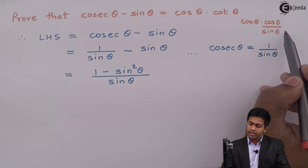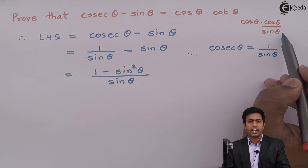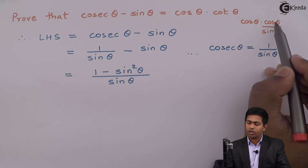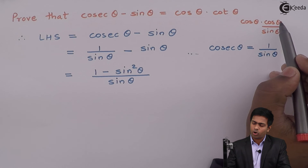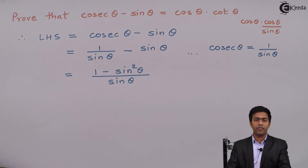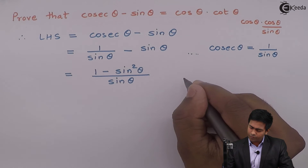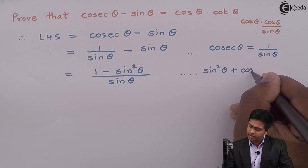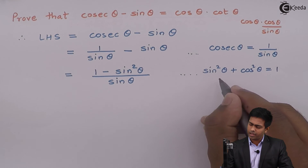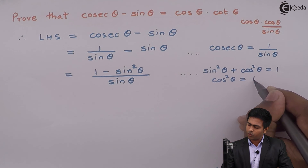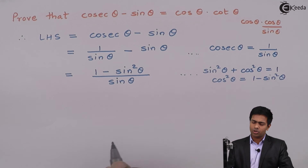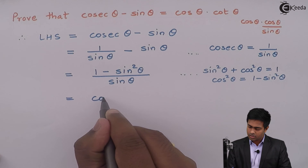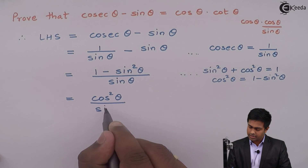In the denominator we want sin theta, and we already have sin theta in the denominator, but in the numerator we want cos square theta. To get cos square theta from 1 minus sin square theta, we have a formula. The formula is sin square theta plus cos square theta equals 1, which means 1 minus sin square theta equals cos square theta. So I can substitute 1 minus sin square theta as cos square theta upon sin theta.